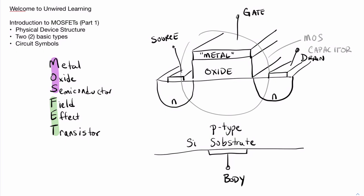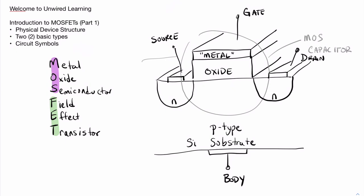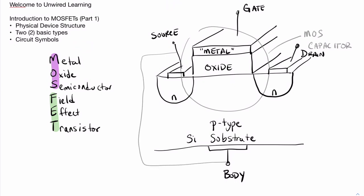This bottom connection we'll call the body. You might wonder, how does this compare to a BJT in that it's four versus three terminals? Well, oftentimes, you'll find that the source and body are tied together.